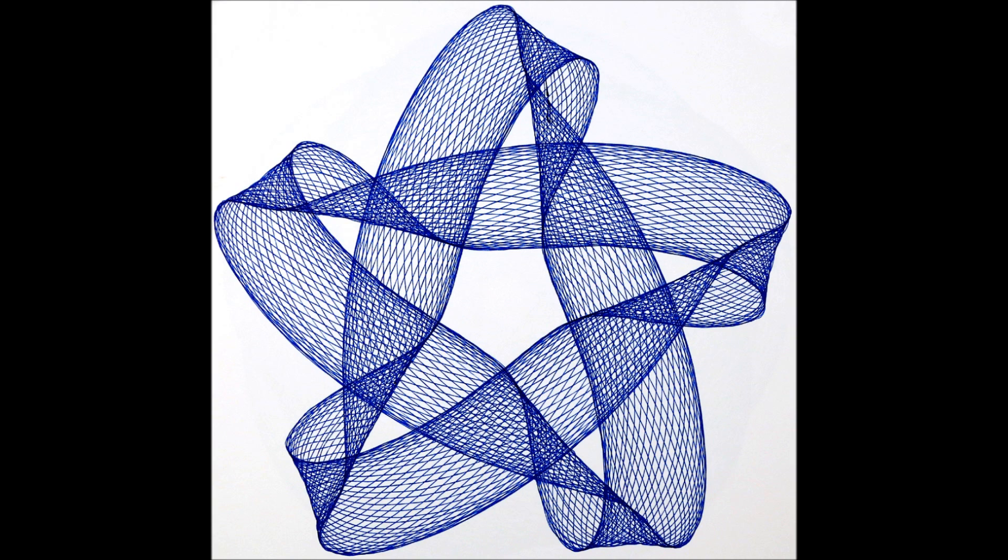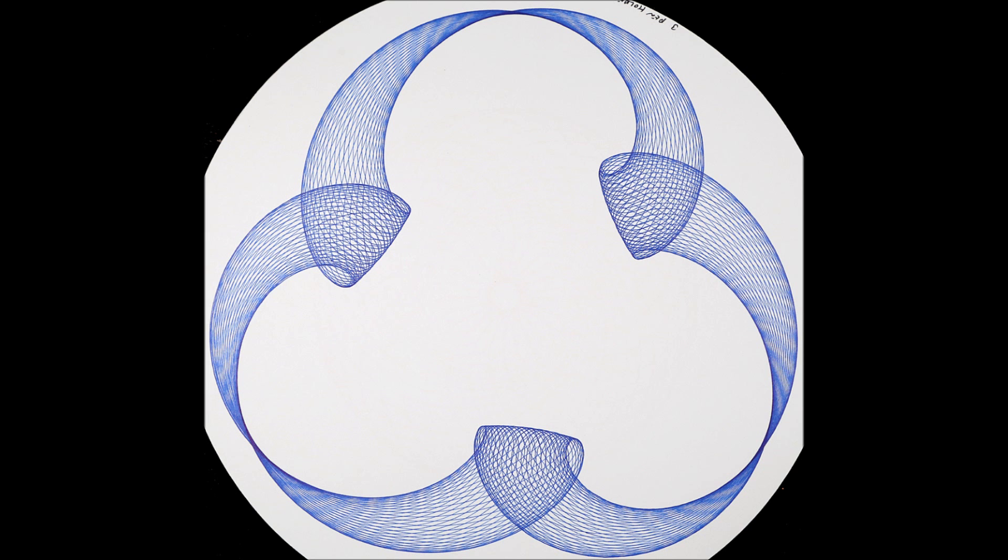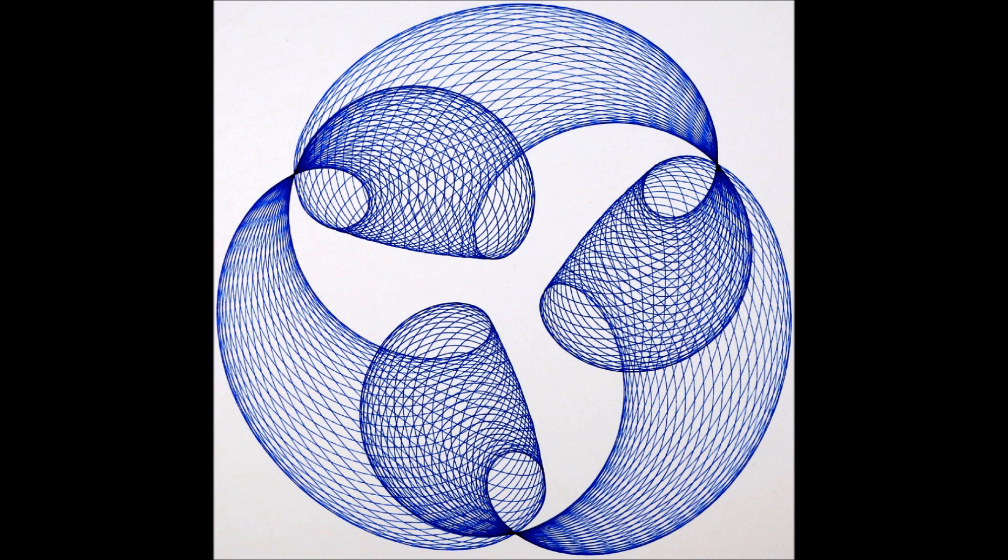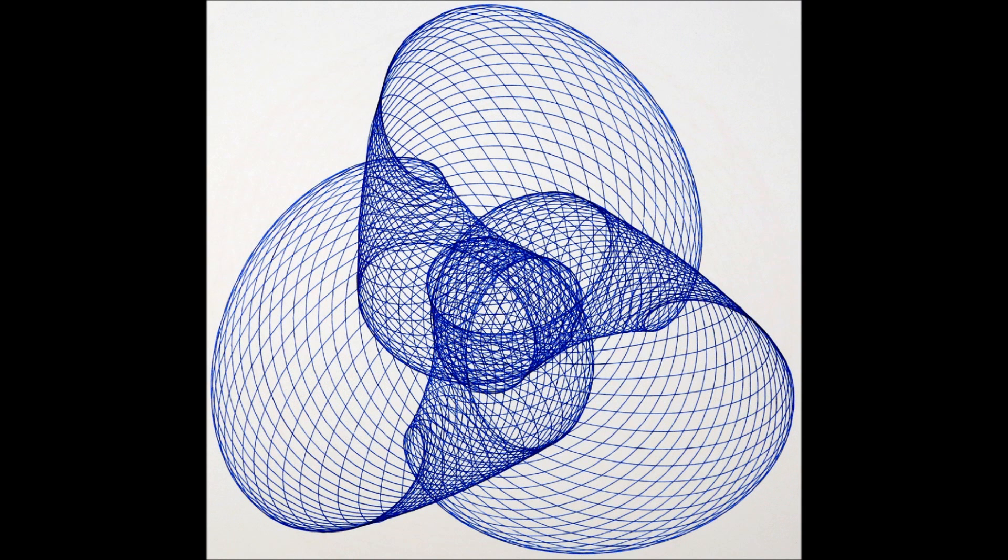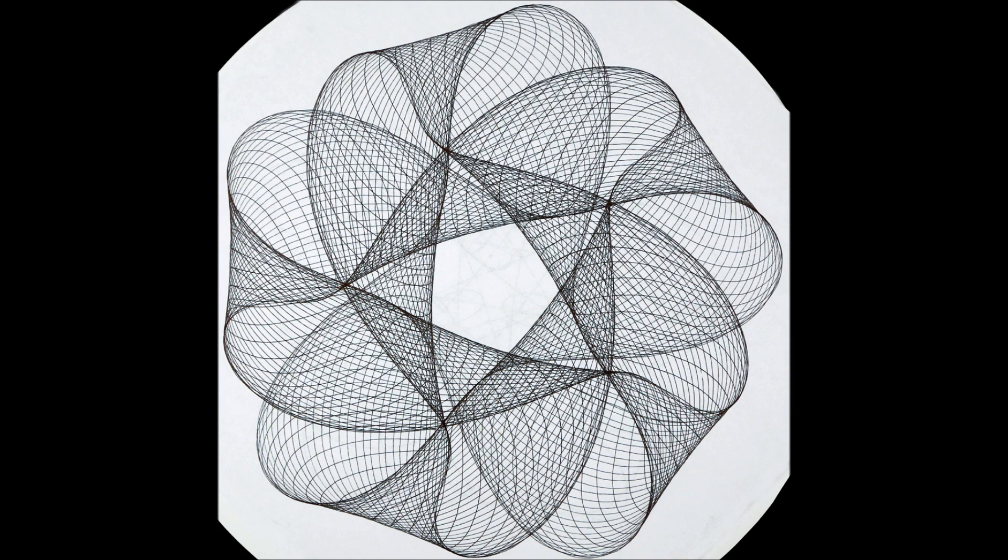In the following three images, the pen is being repositioned so that it oscillates closer to the center of the piece of paper. This results in the image being twisted and compressed towards the center. Here are two more images showing the same principle.